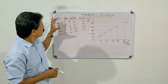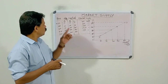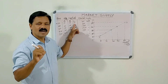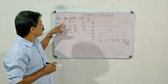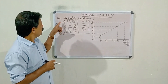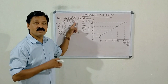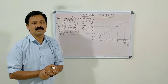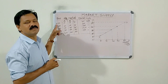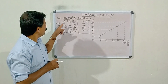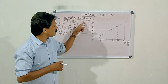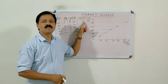This is the market supply schedule with producers A, B, and C. These three producers are supplying different quantities of commodities at a given price, say rupees 10. This is the market price. At rupees 10, producer A supplies 5 units, B supplies 10 units, and C supplies 15 units — giving 30 units of good X at a unit price of 10.